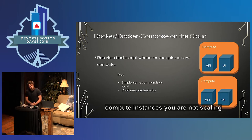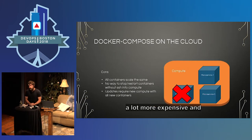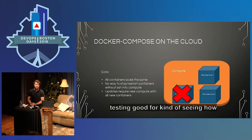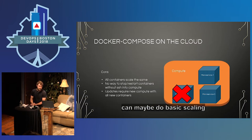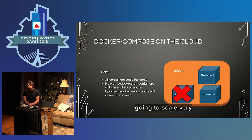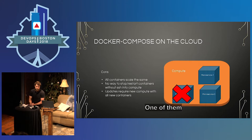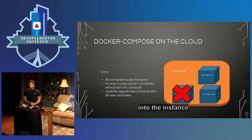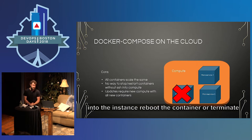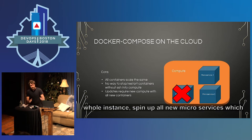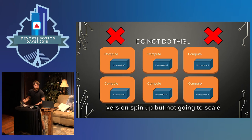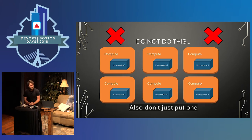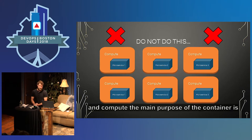This approach is good for testing, good for seeing how your containers will work on cloud infrastructure and how you might do some basic scaling and basic networking. But it's not going to scale very well if you have multiple microservices on the same compute and one of them fails — there's no real way to automatically fix the problem. You might have to SSH into the instance, reboot the container, or terminate the whole instance and spin up all new microservices, which is expensive and adds latency. Also, don't just put one microservice or one container in each compute — the main purpose of the container is to be flexible, and that's what you're trying to avoid.